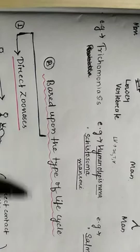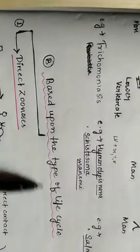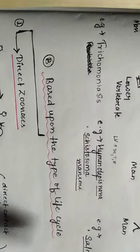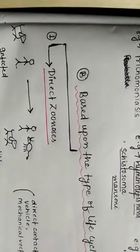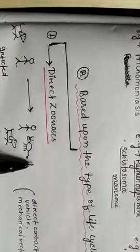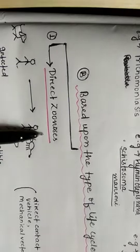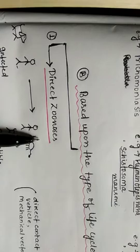The next classification of parasitic zoonosis is based upon the type of life cycle. And on the basis of the type of life cycle, the parasitic zoonosis can be classified into direct zoonosis, cyclozenosis, metazoonosis, and saprozoonosis.